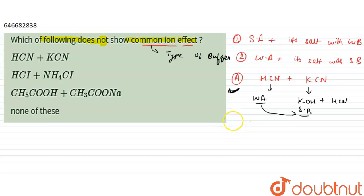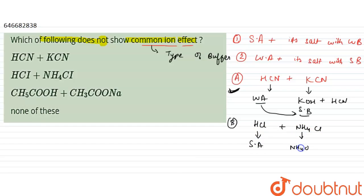In Option B, we have HCl plus NH4Cl. HCl is a strong acid, and NH4Cl is formed from NH4OH plus HCl. Since HCl is a strong acid and NH4OH is a weak base, this follows the first condition. So Option B also shows the common ion effect.